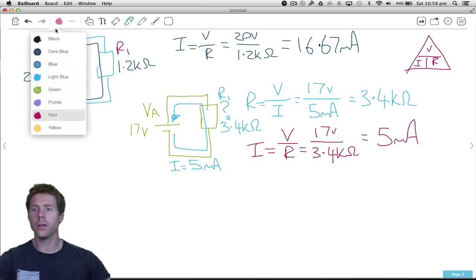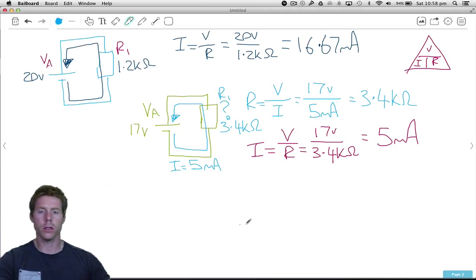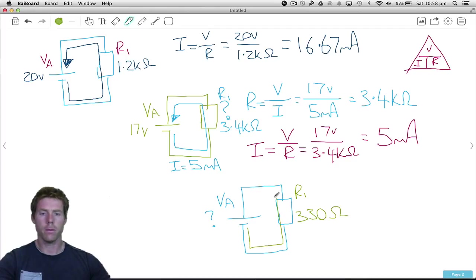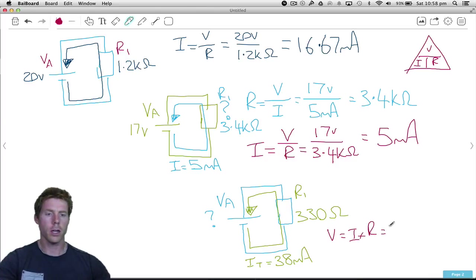Let's do another one. This time I'm going to give you the current and the resistance. So we have a power supply however we do not know what that power supply value is. So voltage applied is unknown. Resistor 1 I'm going to make 330 ohms. The current flow in the circuit is 38 milliamps. Therefore what is the power supply voltage? Well we need voltage. It's going to be current multiplied by resistance. Voltage equals current multiplied by resistance. The current is 38 milliamps. The resistance is 330 ohms.